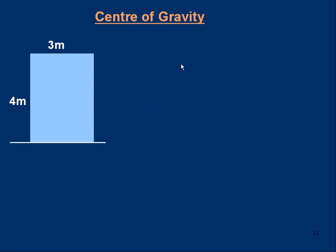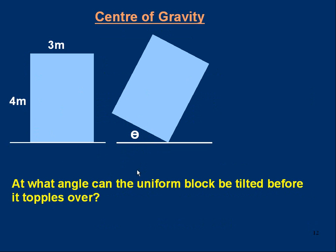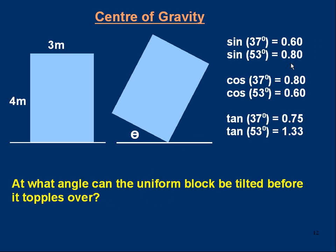Let's do a final problem. Here's a block resting on the ground — four meters tall and three meters across. If we push the block, we can make it tilt so the base sets an angle theta to the horizontal ground. If theta is small, the block will return. If we make theta larger than a certain angle, the block will topple over onto its side. The question is: at what angle theta can the uniform block be tilted before it topples over? Pause the video, sketch it out, and think about it.